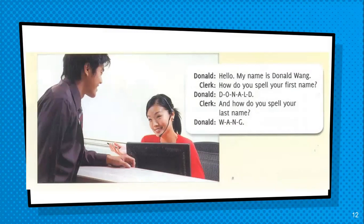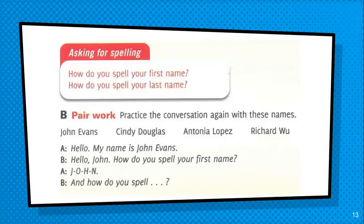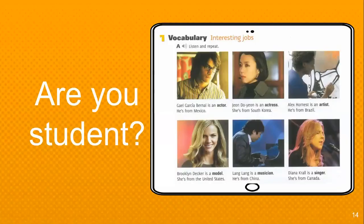It's pretty easy for you to spell it, because spelling is very important when you introduce your name with spelling. Asking for spelling: 'How do you spell your first name? How do you spell your last name?' Practice with your friend — John Evans, Cindy Douglas, Antonio Lopez, Richard Wu. Hello, my name is John Evans. How do you spell your first name? J-O-H-N.